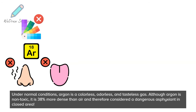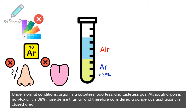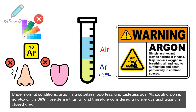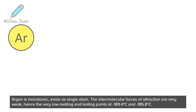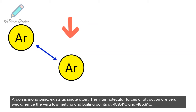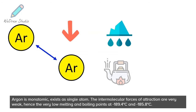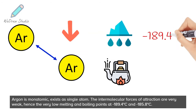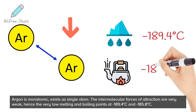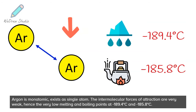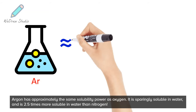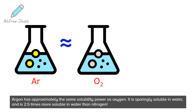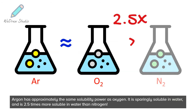Under normal conditions, argon is a colorless, odorless, and tasteless gas. Although argon is non-toxic, it is 38% more dense than air and therefore considered a dangerous asphyxiant in enclosed areas. Argon is monatomic — it exists as a single atom. The intermolecular forces of attraction are very weak, giving it very low melting and boiling points of minus 189.4°C and minus 185.8°C. Argon has approximately the same solubility as oxygen, is sparingly soluble in water, and is 2.5 times more soluble in water than nitrogen.